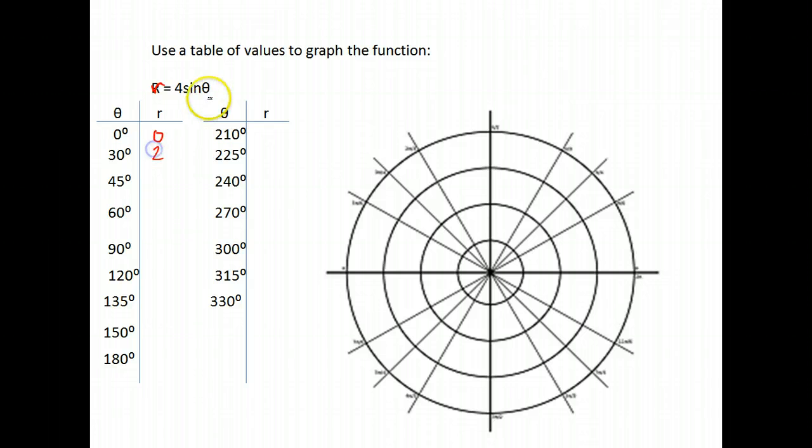The sine of 45, and again I'm just using a calculator here, is 0.7 times 4 is 2.8.